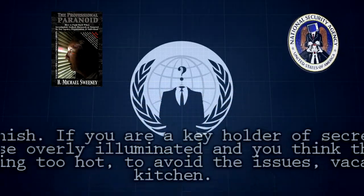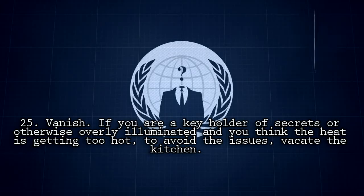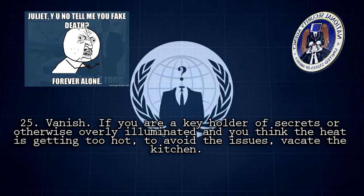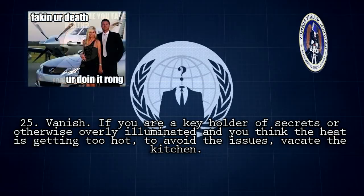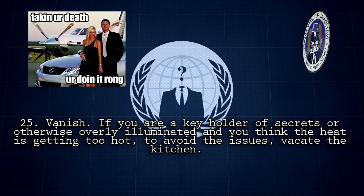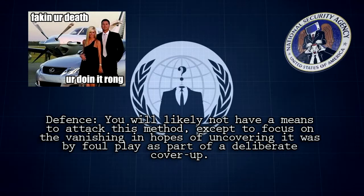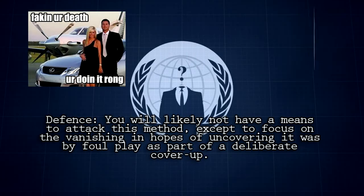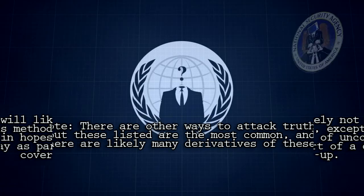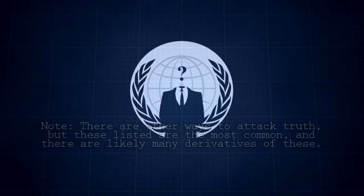Rule 25: Vanish. If you are a keyholder of secrets or otherwise overly illuminated and you think the heat is getting too hot to avoid the issues, vacate the kitchen. Example: Do a Robert Vesco and retire to the Caribbean. If you don't, somebody in your organization may choose to vanish in the way of Vince Foster or Ron Brown. Defense: You will likely not have a means to attack this method, except to focus on the vanishing in hopes of uncovering whether it was by foul play as part of a deliberate cover-up. Note: there are other ways to attack truth, but these listed are the most common, and there are likely many derivatives of these.